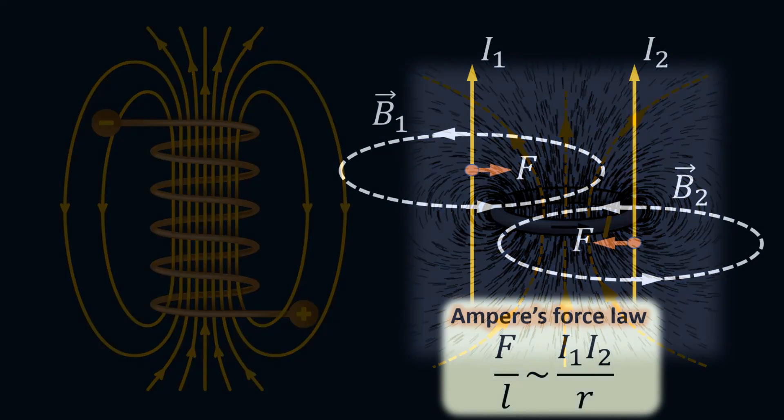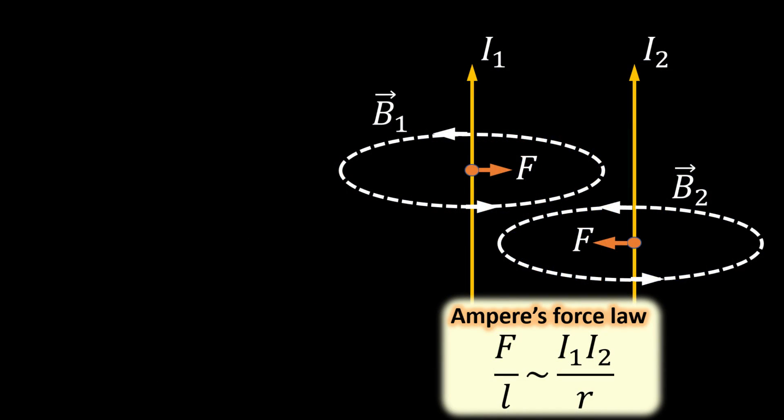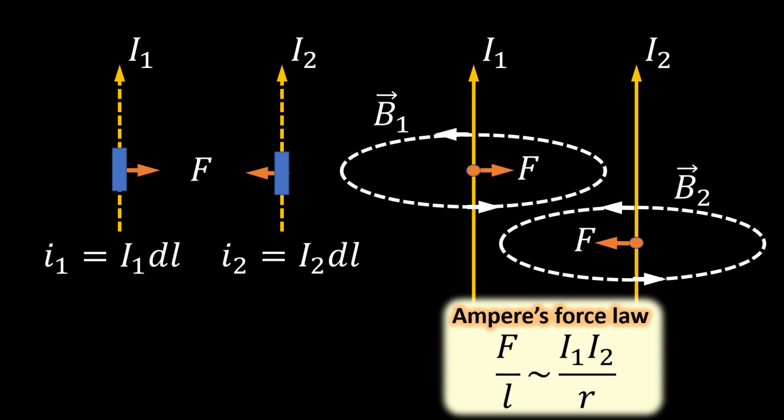This further solidified the notion that elemental current loops are building blocks of magnets. The pressing question then was how to explain his newly discovered forces between current-carrying wires in Newtonian terms. Forces as electrical current can be treated mathematically as a string of infinitesimal current elements, each with its strength and direction.